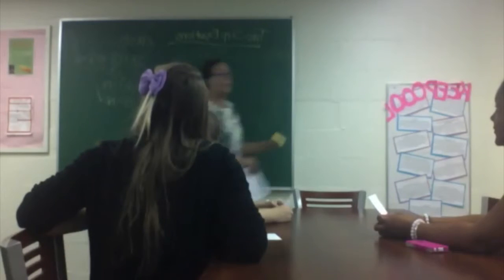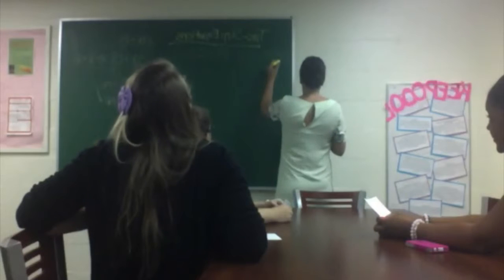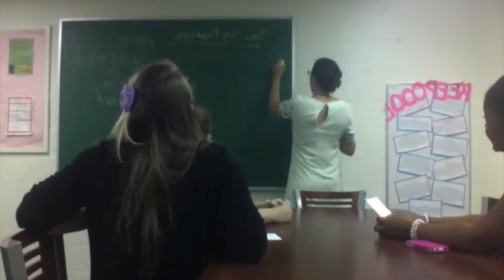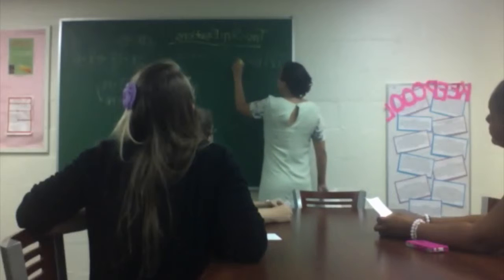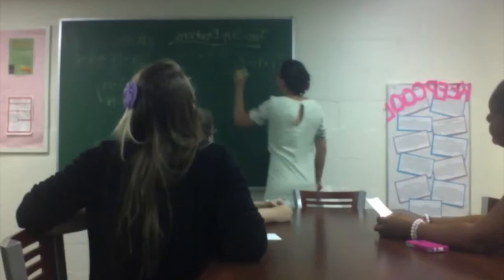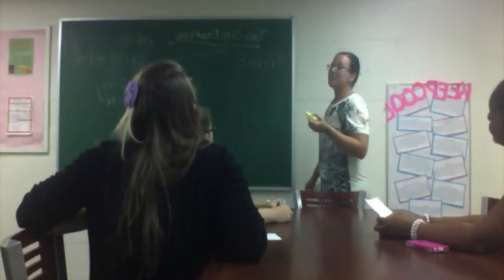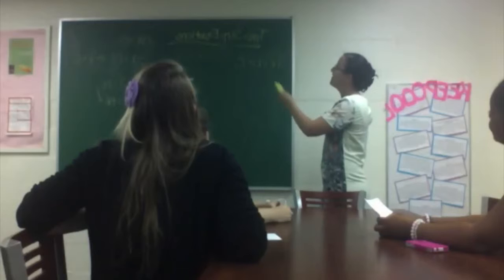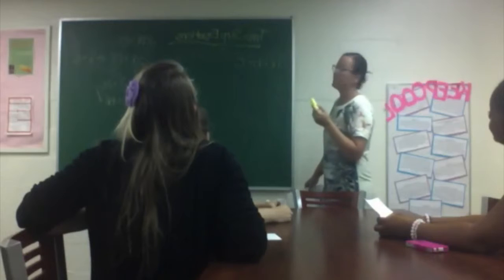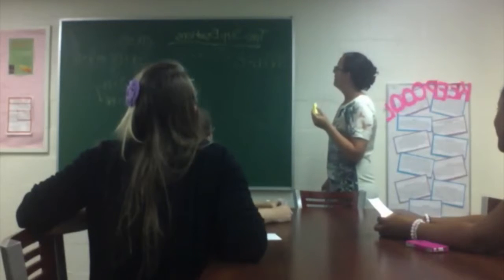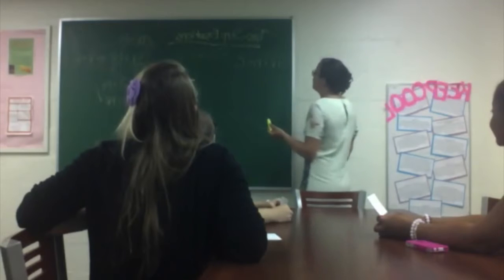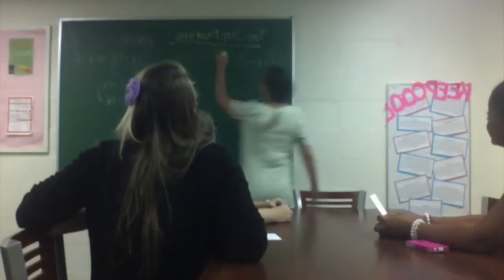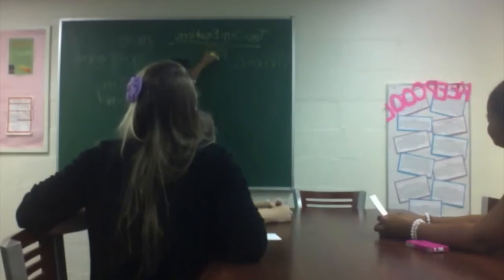So today we're going to be doing two-step equations, and that has the form of AX plus B equals C. What's different about this than the one-step equation? It has two parts, right?